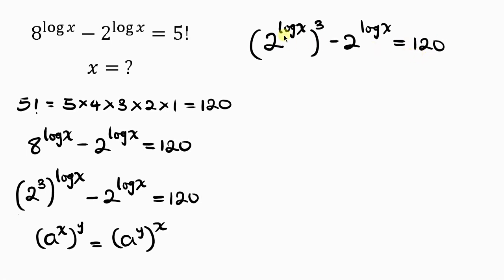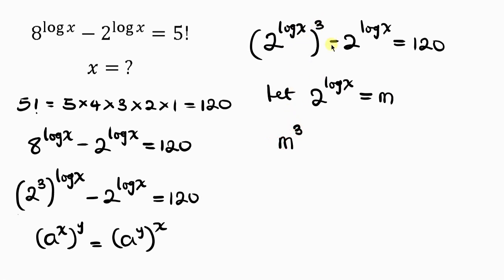Notice that 2 to the log x is common, so we can introduce substitution. Let 2 to the log x equal m. That means wherever we see 2 to the log x, we write m. So this becomes m cubed minus m equal to 120.